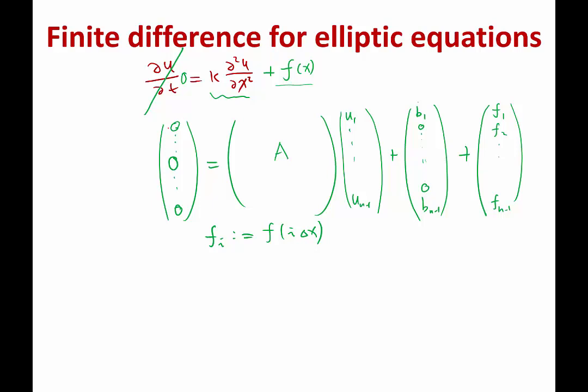We get a linear equation, right? Ax plus, if you call this just a vector c, Ax plus, Au plus c equal to zero.